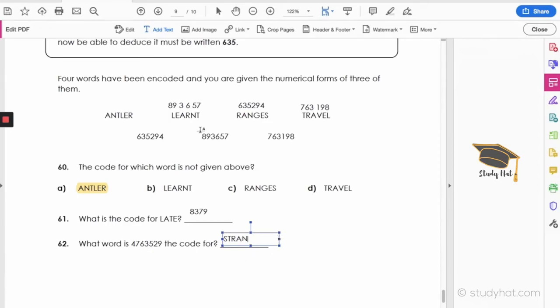we know that 5 is N from LEARNT and RANGES. 2, we know that 2 is G from RANGES. There it is, 2. And 9, we know that 9 is E from TRAVEL, LEARNT and RANGES. So STRANGE is our word.